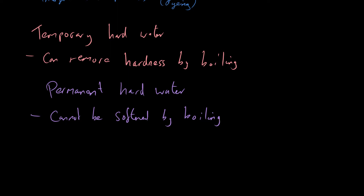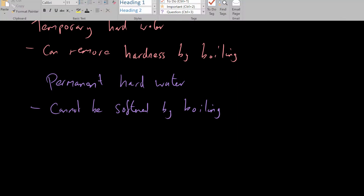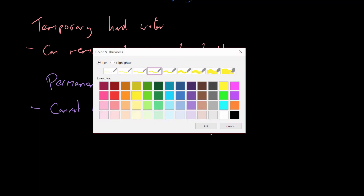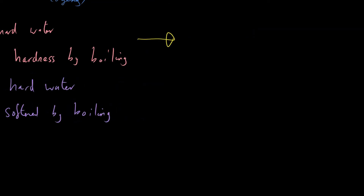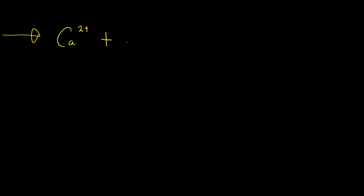This is for those of you doing the higher tier paper. We can look at equations which describe how temporary hard water is softened when we boil. In temporary hard water we have calcium ions present in the water which makes it hard, and we also have hydrogen carbonate ions — HCO₃⁻ ions. Both of these are in solution, written as (aq).